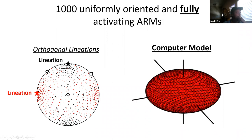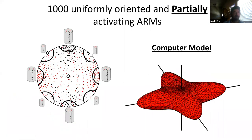On the left I show a stereonet which has a composite fabric consisting of two orthogonal lineations. I used this anisotropy as a model input and applied 1000 uniformly oriented fully activating ARMs — as expected the resulting shape was a perfect ellipsoid and the composite fabric was not detectable. I then repeated the same model but used 1000 partially activating ARMs. In this case the result is not an ellipsoid and it can characterize that higher-order anisotropy shape, which is easy to see from the change in apparent volume as a function of field orientation — the anisotropy in the concentration of activated grains.